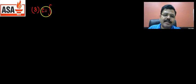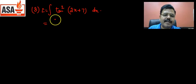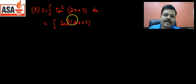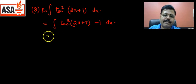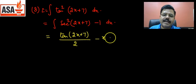For ∫tan²(2x + 7) dx: tan²x has no direct integration formula, so we convert it using sec²x − 1. So this becomes ∫[sec²(2x+7) − 1] dx = tan(2x+7)/2 − x + c, since the coefficient of x is 2.